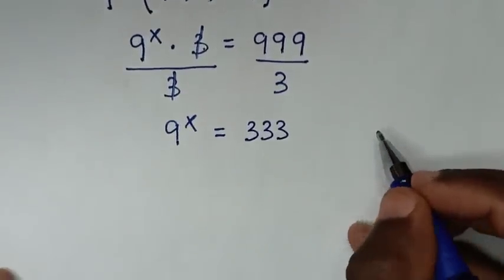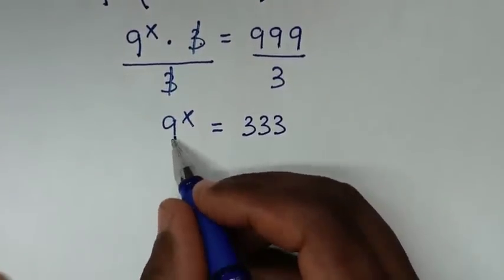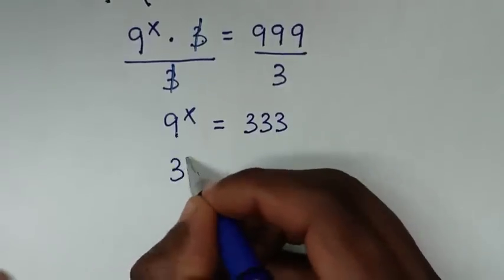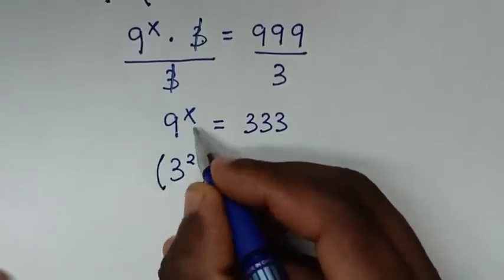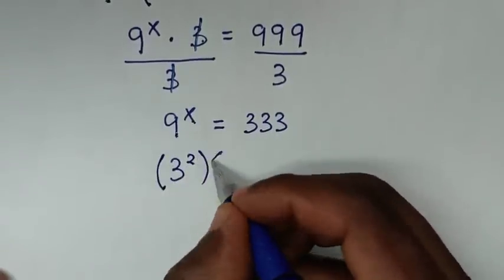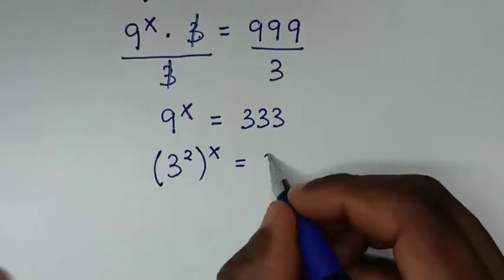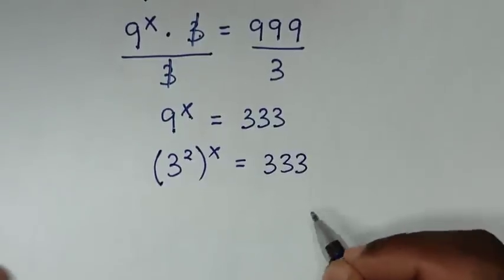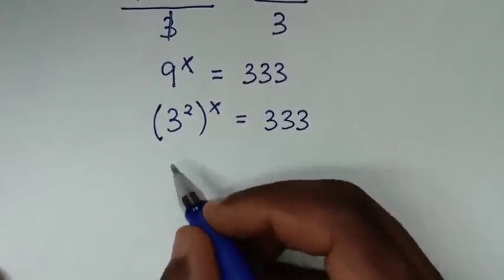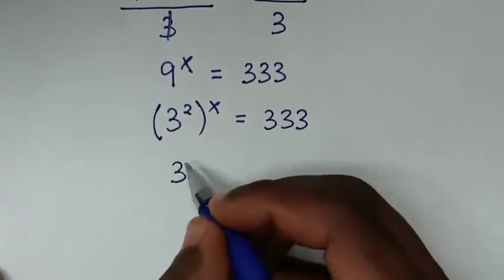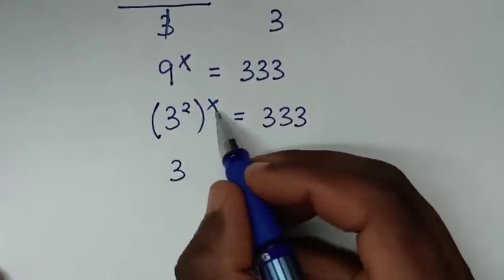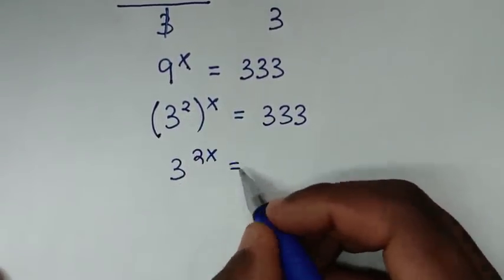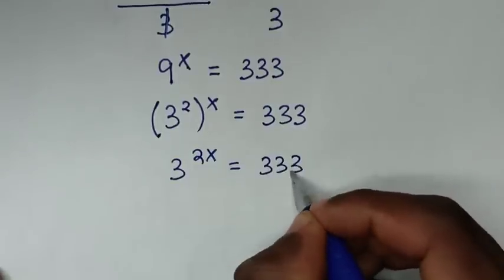Then in the next step, 9 is the same as 3 squared, so (3 squared) power x is equal to 333. So it will be 3 power 2x is equal to 333.